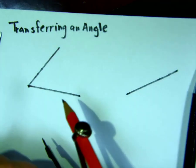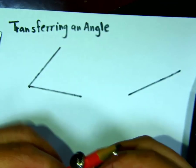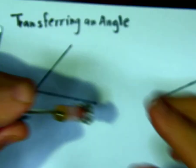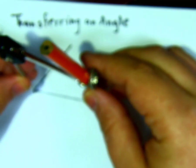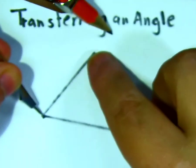So how to perform this task? First, you have to open the compass at any convenient radius and put it at the vertex of the angle.